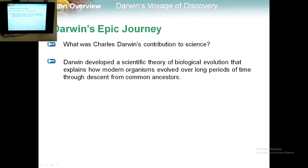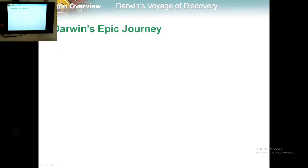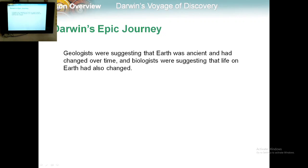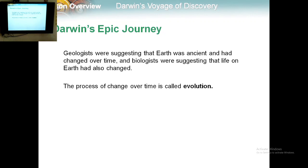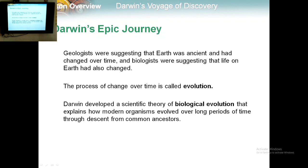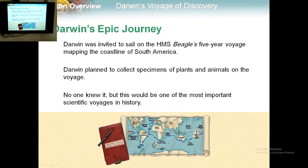Geologists were suggesting that Earth was ancient and had changed over time, and biologists were suggesting that life on Earth had also changed. The process of change over time is called evolution. Darwin developed a scientific theory of biological evolution that explains how modern organisms evolved over long periods of time through descent from common ancestors.